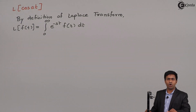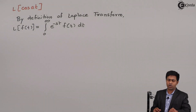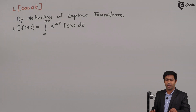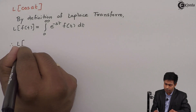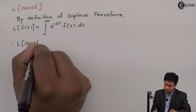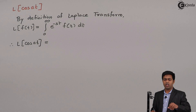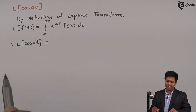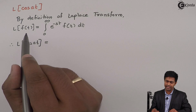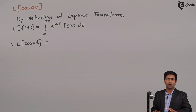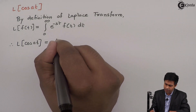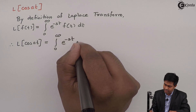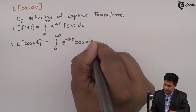Now let us find the Laplace transform of cos(AT). Therefore, Laplace of cos(AT) equals — here f(t) in the definition is cos(AT), so on the right-hand side we substitute f(t) as cos(AT). We will get the integration from 0 to infinity of e raised to minus st times cos(AT) dt.